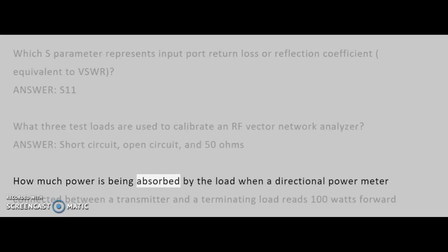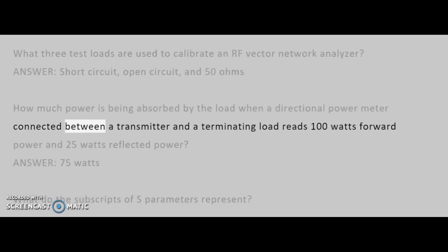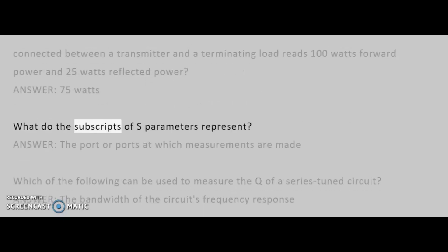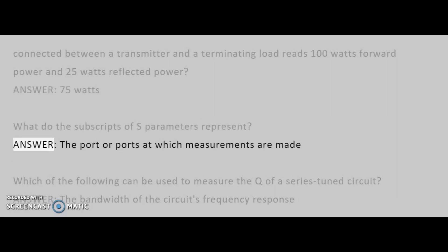How much power is being absorbed by the load when a directional power meter connected between a transmitter and a terminating load reads 100 watts forward power and 25 watts reflected power? Answer: 75 watts. What do the subscripts of S-parameters represent? Answer: The port or ports at which measurements are made.